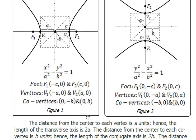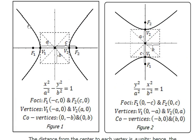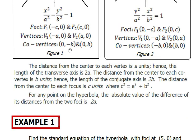Let me illustrate this. Say we take a point P on the hyperbola and connect it to F1, then connect it to F2. If we take the absolute value of the difference between the distance PF1 and PF2, that is equal to 2a — which is the distance between the two vertices.